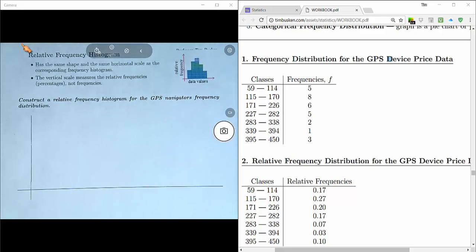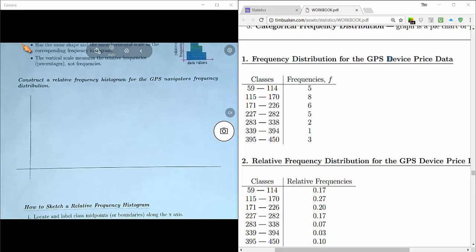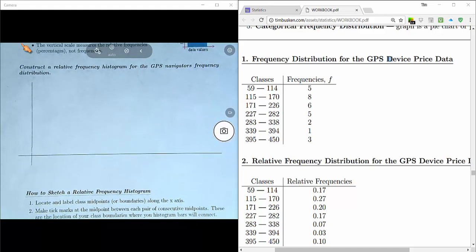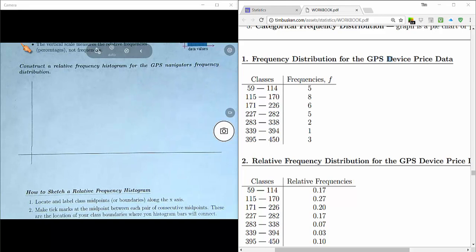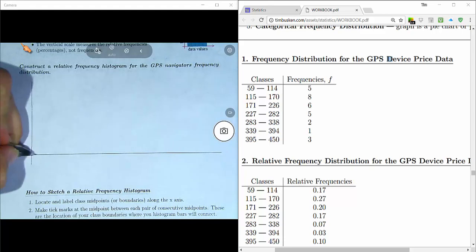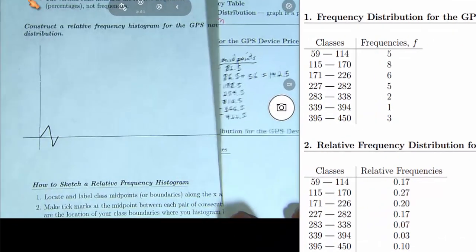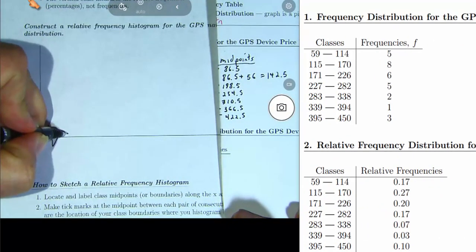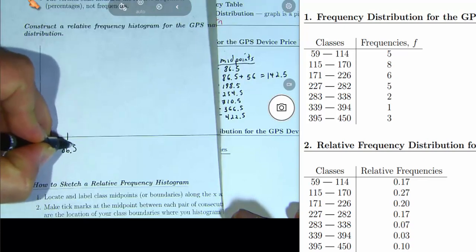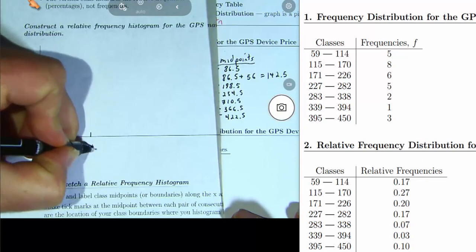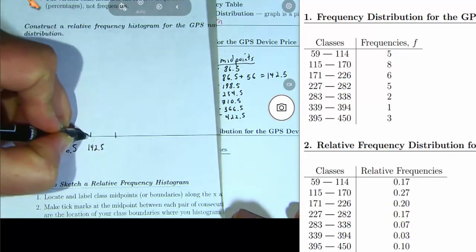So when you go to construct your relative frequency histogram, you do a lot of the same steps that you did when it comes to graphing your histogram. Step one, locate and label your class midpoints along your x-axis. So dig out your midpoints for this example here. Here they are.